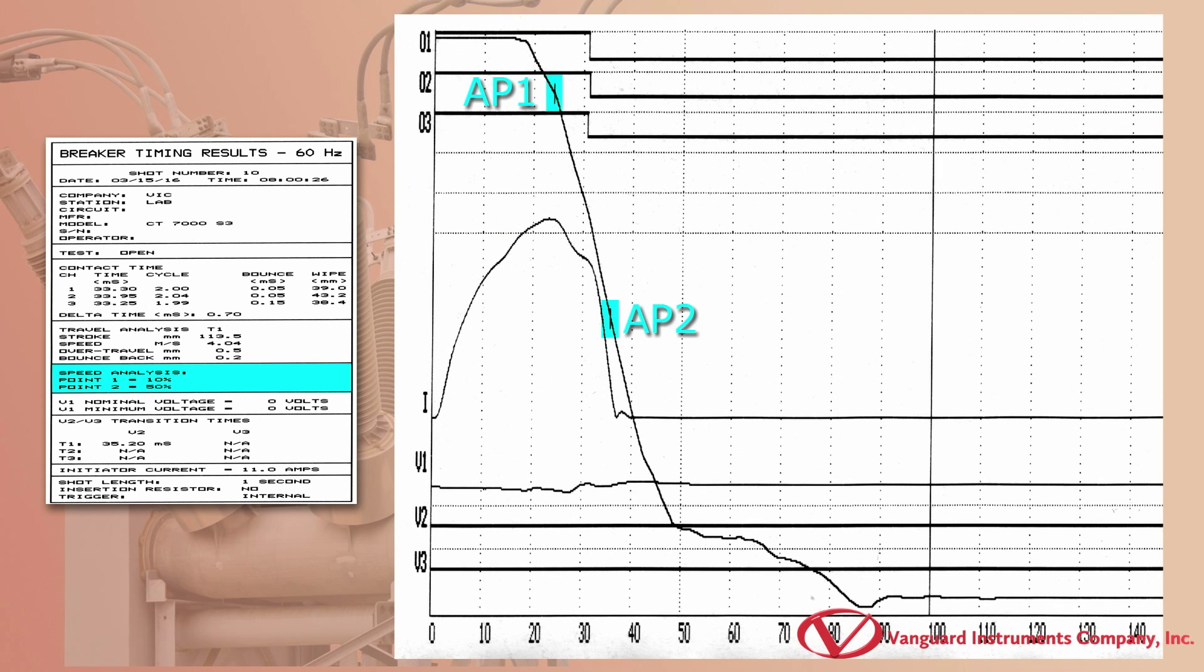The AP1 in this case is the distance that is 10% of the stroke and is measured from the fully closed position.